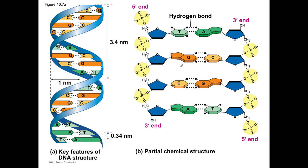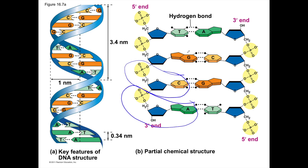DNA is a polymer made out of monomers called nucleotides. Each nucleotide is made out of three things: a phosphate group, a five-carbon sugar (which is deoxyribose in DNA or ribose in RNA), and a nitrogen-containing base. These bases are the letters we use to think about DNA: A, T, C, G — or A, U, C, G in RNA.